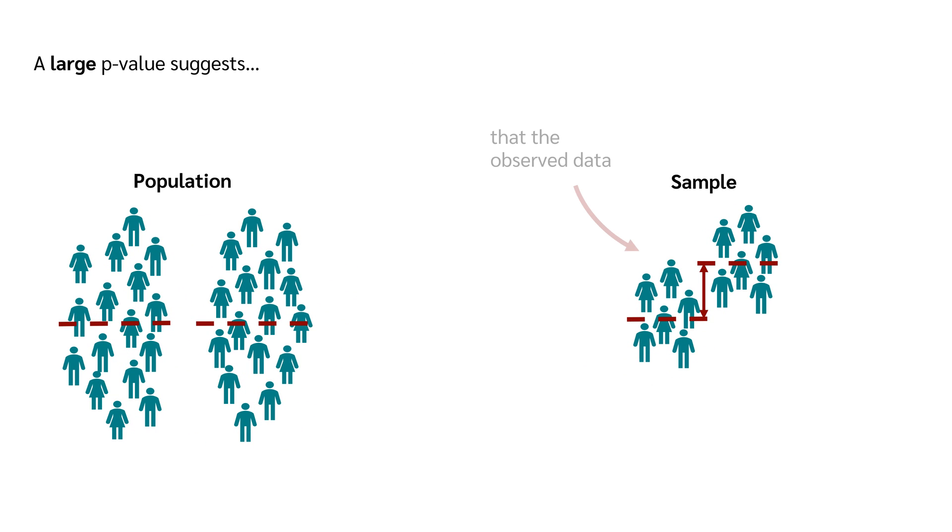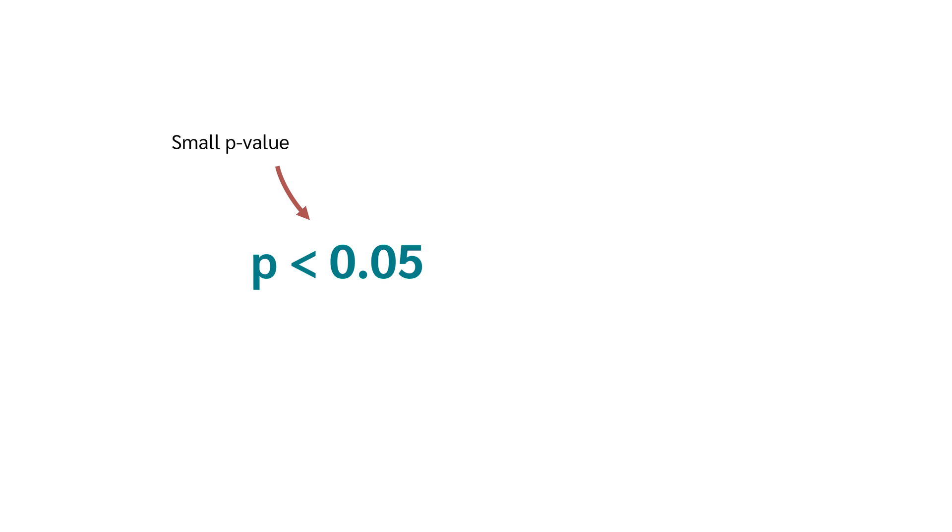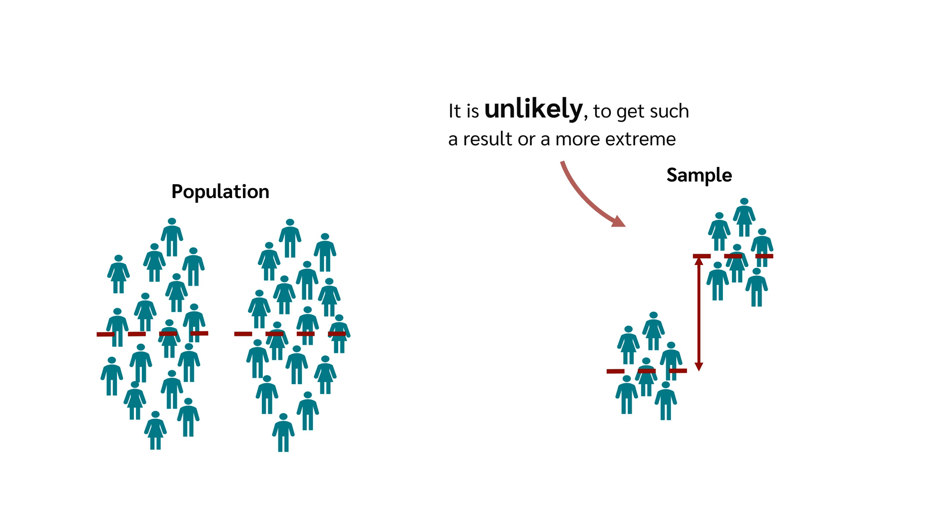A large p-value suggests that the observed data is inconsistent with the null hypothesis and we will not reject it. But note, there is always a risk of making an error. A small p-value does not prove the alternative hypothesis is true. It is only saying that it is unlikely to get such a result or a more extreme when the null hypothesis is true.